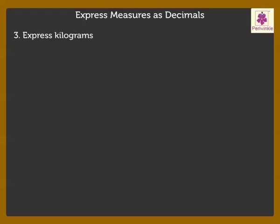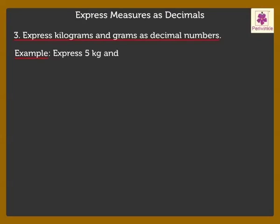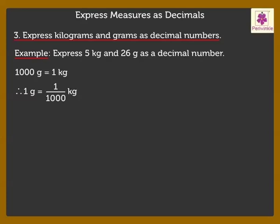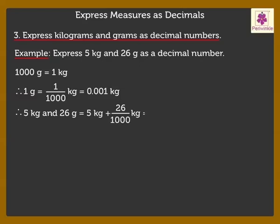Similarly, let us express kilograms and grams as decimal numbers. Express 5 kilograms and 26 grams as a decimal number. 1000 grams is equal to 1 kilogram. Therefore, 1 gram is equal to 1 upon 1000 kilograms, which is equal to 0.001 kilogram. Hence, 5 kilograms and 26 grams is equal to 5 kilograms plus 0.026 kilograms, which is equal to 5.026 kilograms.